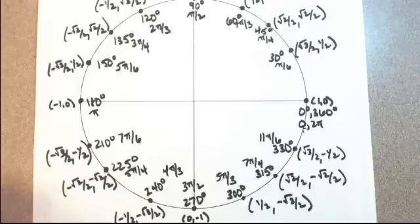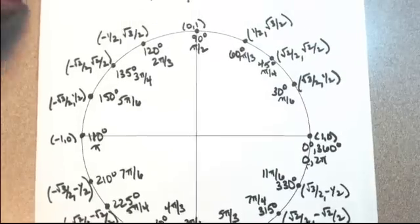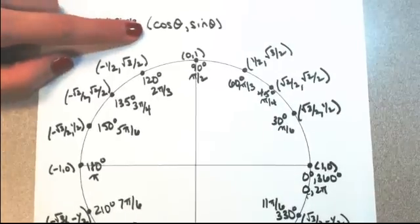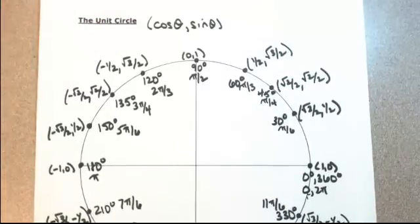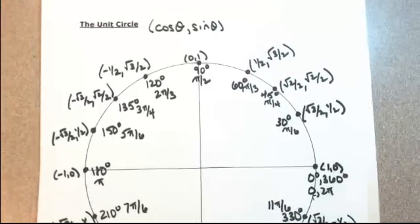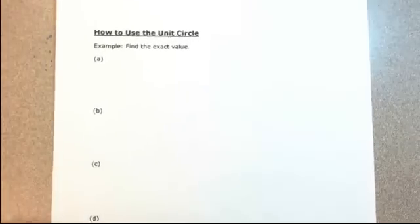Okay, so we have the unit circle all filled in. Let's see how we use this. First of all, remember that on the unit circle, the first coordinate is cosine, the second coordinate is sine. So if I want to use this unit circle, let's find some of our trig functions.